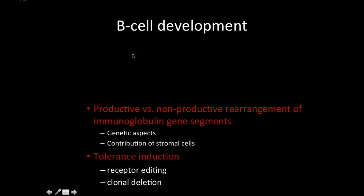For B-cell development, there are physical processes and mechanisms we can use to plot the progression of development. This starts off with the actual production of the immunoglobulin first, and then after that we have tolerance induction—which I want you to think of as synonymous with negative selection.